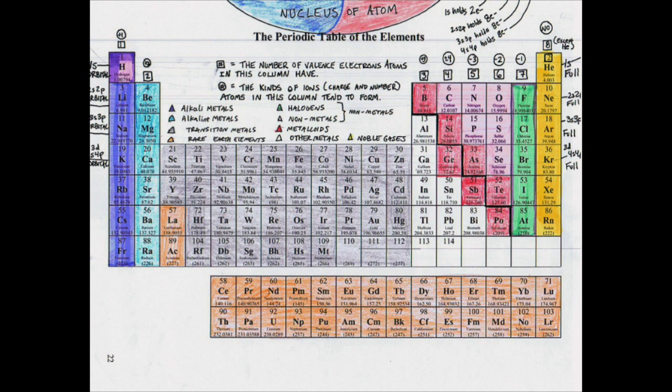The metalloids above the stair-shaped line drawn on this periodic table act like nonmetals most often, whereas those beneath it act like metals most often.